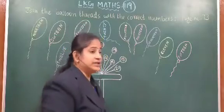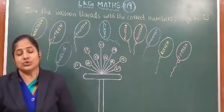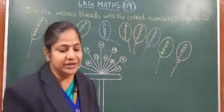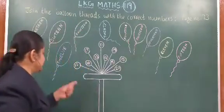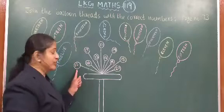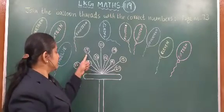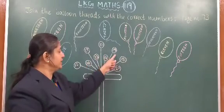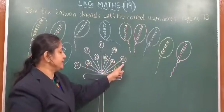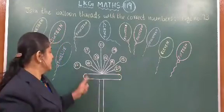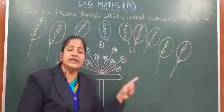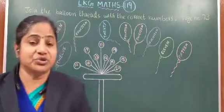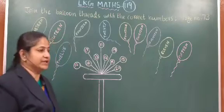Now on page No. 73, numbers — you have to join the number names and their numerals. Here it is already written the numerals: 12, 16, 17, 13, 11, 14, 19, 18, 15, 20. That means 11 to 20 numbers are there — there are total 10 numbers. And here it is already written the number names in the balloon.